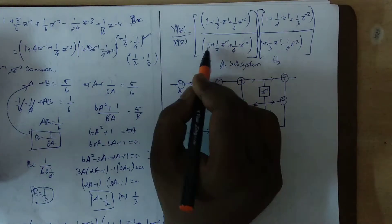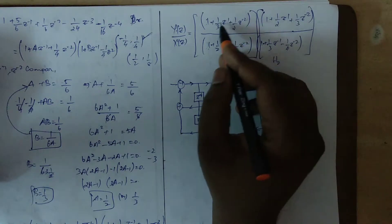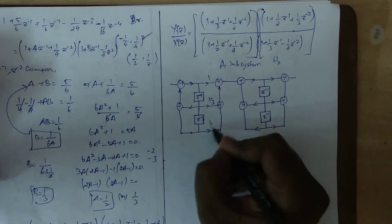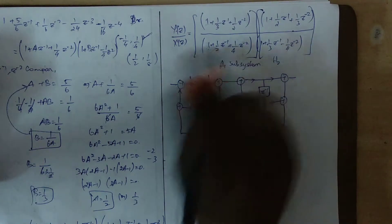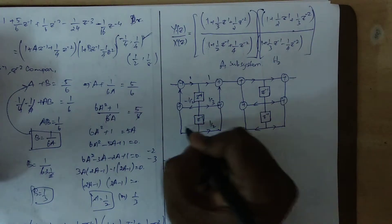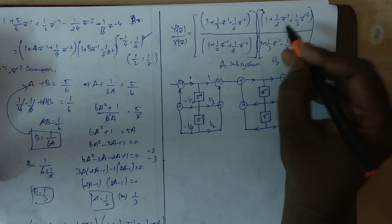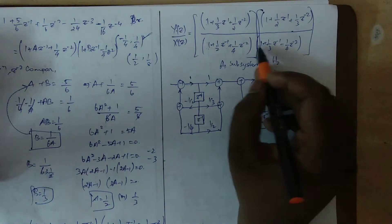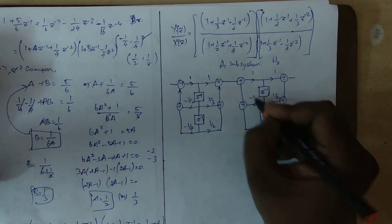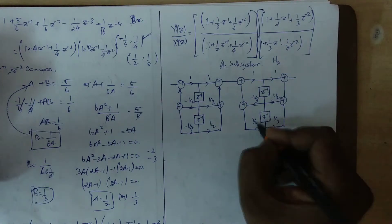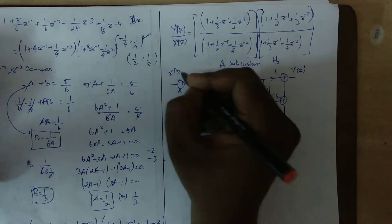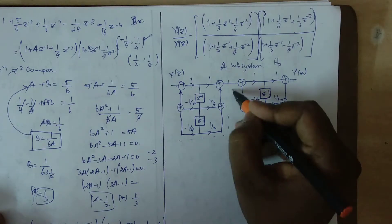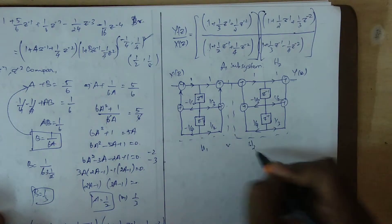So Y(z) has coefficients a0, a1, a2 and b0, b1, b2. Here b = [1, 1/3, 1/2], and the a coefficients are minus a1 and minus a2, so: −1/2, −1/4. For H2: b = [1, 1/2, 1/3], and a = [1, −1/3, +1/4]. So this is my H1 subsystem and H2 subsystem. The product of H1 and H2 will be H(z).